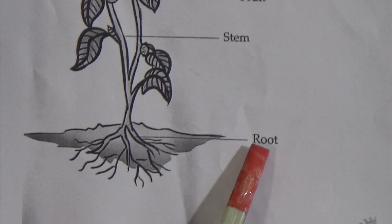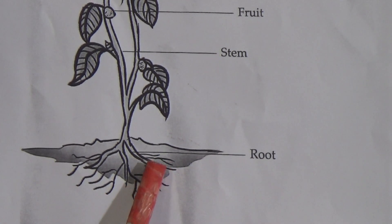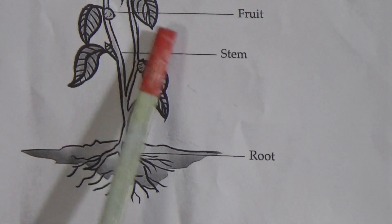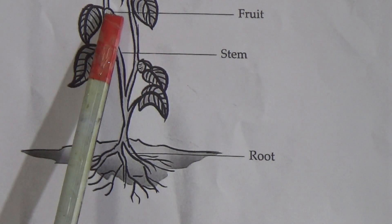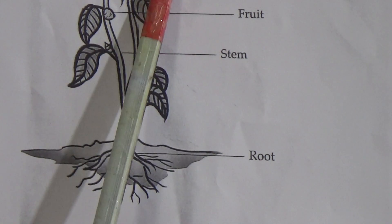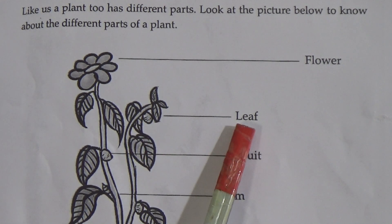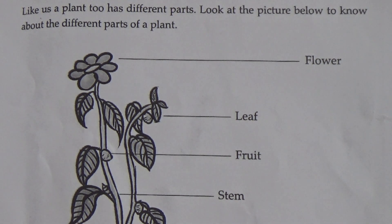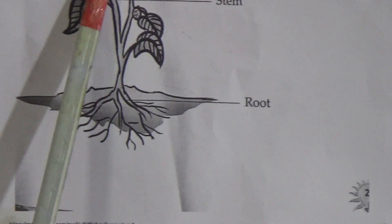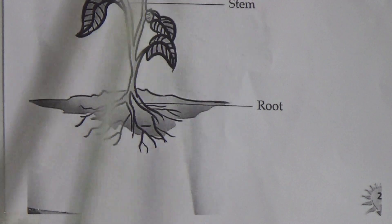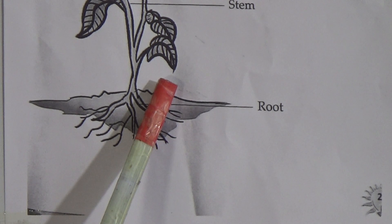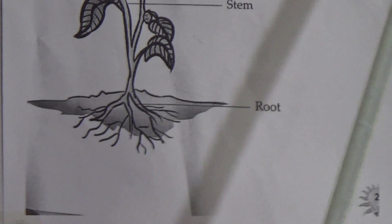In the picture, you can see the figure of a plant. This part is called root. This part is called stem. This part is called leaf. And this one is flower. So we have learned: this is root, this is stem, this is fruit, this is leaf, and this is flower. These are the different parts of a plant.